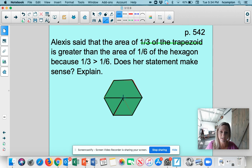And so we could think back to when we had those green triangles in there. Here they come again. And so the area of one-sixth of the hexagon would be one of the triangles. So in that case, does her statement make sense?